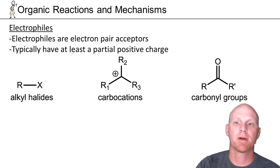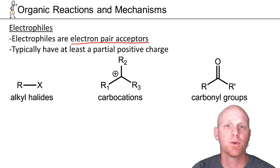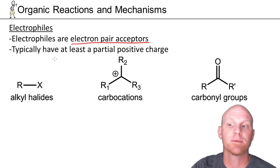Whereas the nucleophile is the electron-pair donor, the electrophile is going to be the electron-pair acceptor. Whereas the nucleophiles tend to be electron-rich, often evidenced by a negative charge, your electrophiles are going to be electron-poor and typically have to at least have a partial positive charge.